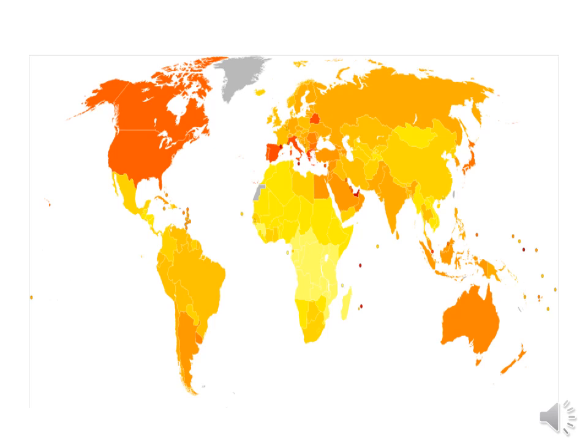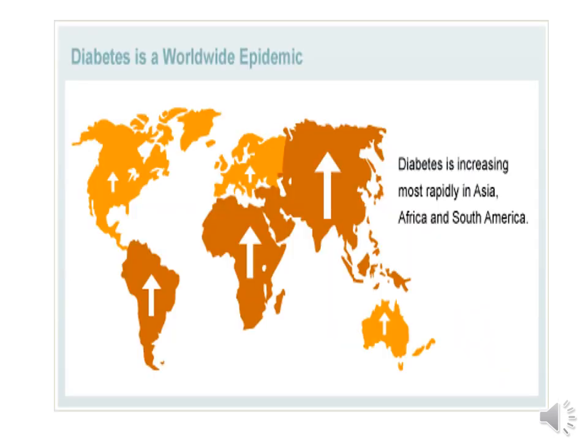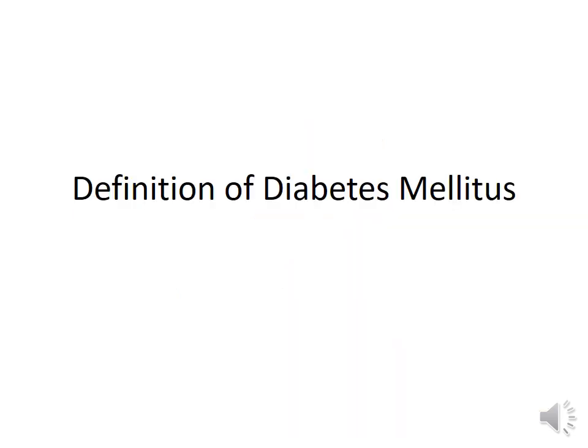Although the incidence of diabetes is increasing in third world countries, the current incidence there remains much less. Definition of diabetes mellitus: 'diabetes' means siphoning of water — excessive formation of urine — and 'mellitus' means a honey-tasting urine.